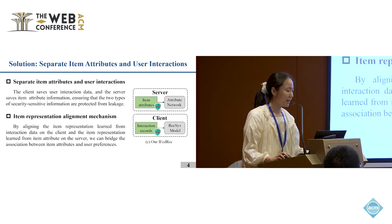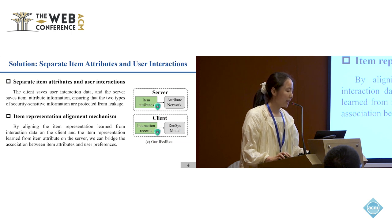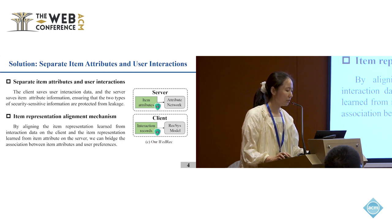Then we devise an item representation alignment mechanism. By aligning the item representation learned from interaction data on the client and the item attributes on the server, we can build the association between item attributes and user preference.